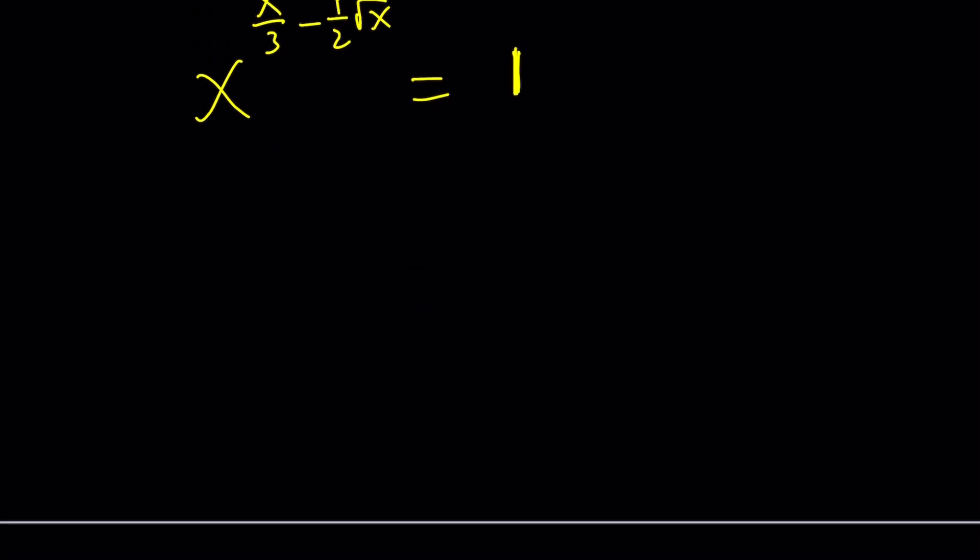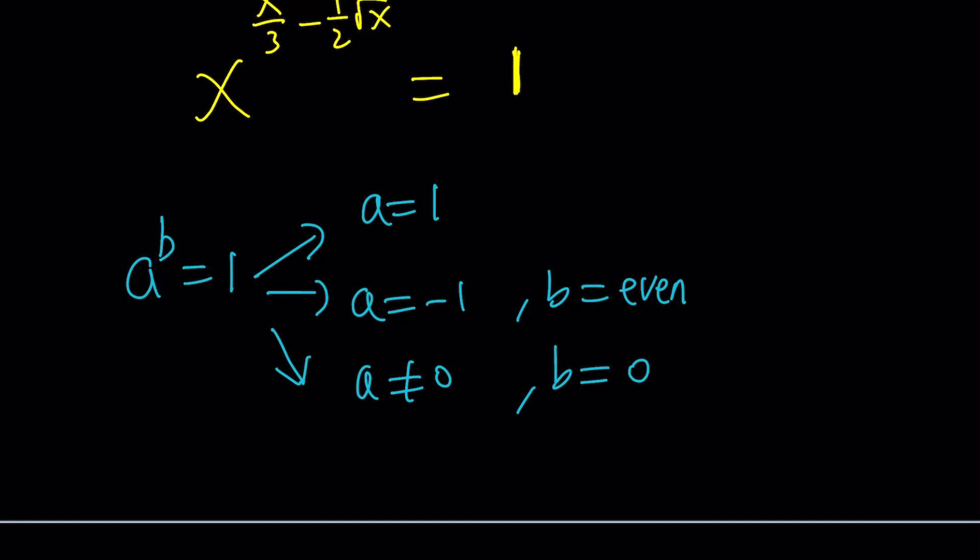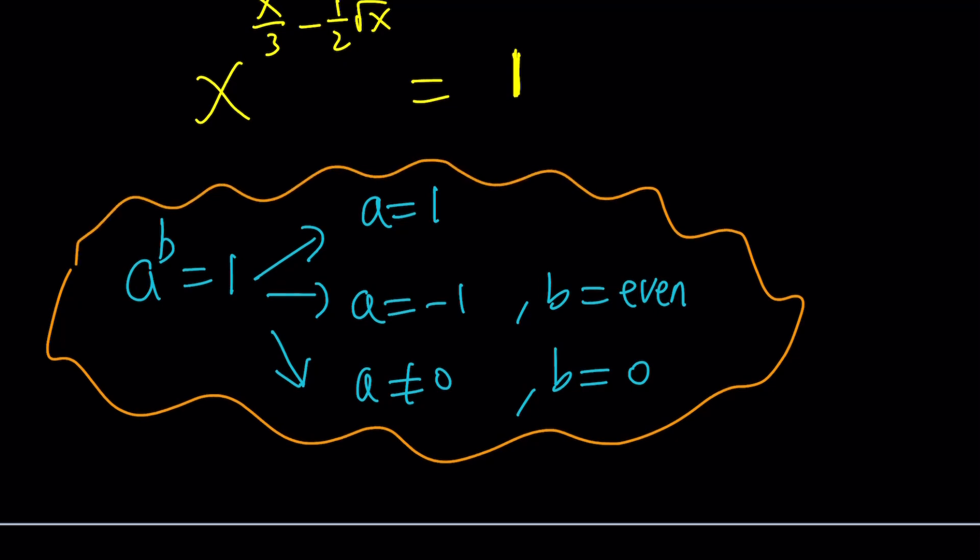What are those cases? Let's talk about it. So whenever you have a to the b equals 1, this means either a is 1 and we don't really care about b, b can be anything. Or a is equal to negative 1 and b must be even, which means it's also supposed to be an integer. And the third case scenario is a should not be 0, but b should be 0. We need this requirement because when you have 0 to the power 0, that's not equal to 1, as far as I know. You could disagree. Now, these are the cases. Let's go ahead and apply each and every one of these to our equation.